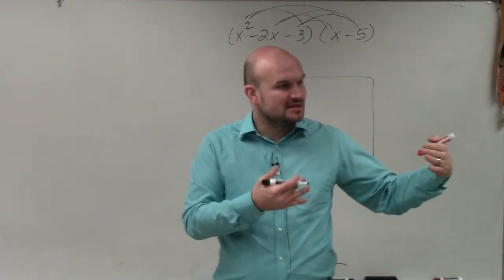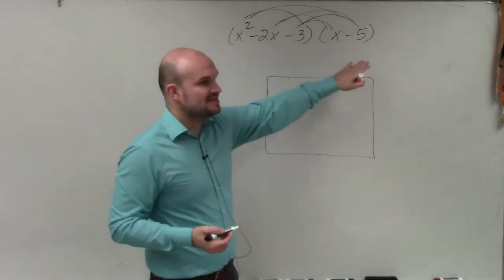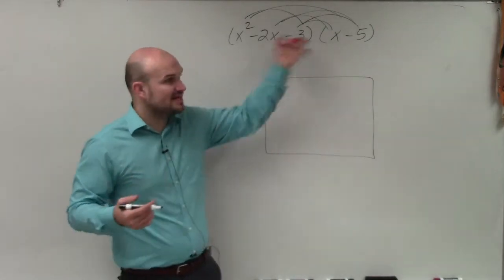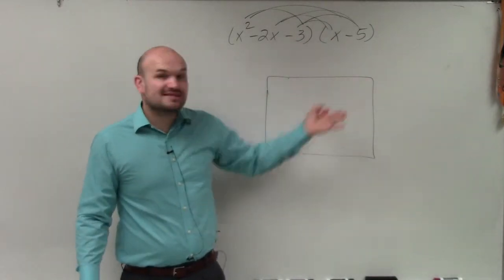We're taking the side lengths. When we say we want to multiply this times this, we're basically saying, what is length times width? Length times width is going to give us our area.